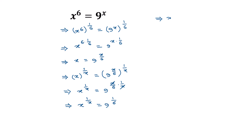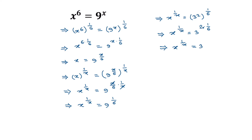Now, 9 can be written as 3 squared, so we can write x to the power 1 over x is equal to 3 squared, whole to the power 1 over 6. This gives 3 to the power 2 times 1 over 6, which simplifies to 3 to the power 1 over 3.